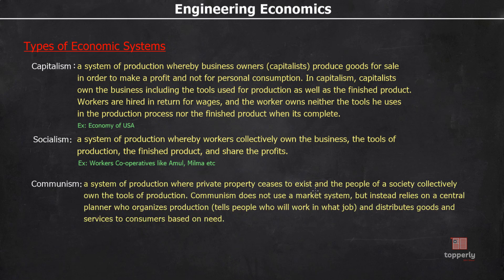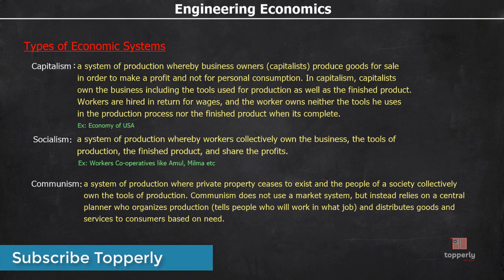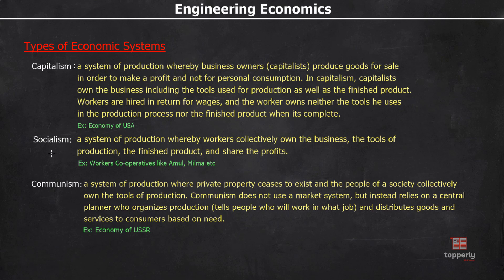The third type is communism. Communism is a system of production where private property ceases to exist and the people of a society collectively own the tools of production. Communism does not use a market system but instead relies on a central planner who organizes production and distributes goods and services based on need. Examples include Cuba and the USSR. Unlike socialism where production is motivated by profits, in communism production is motivated by social welfare — everyone gets goods and services equally, which is why a market system ceases to exist.